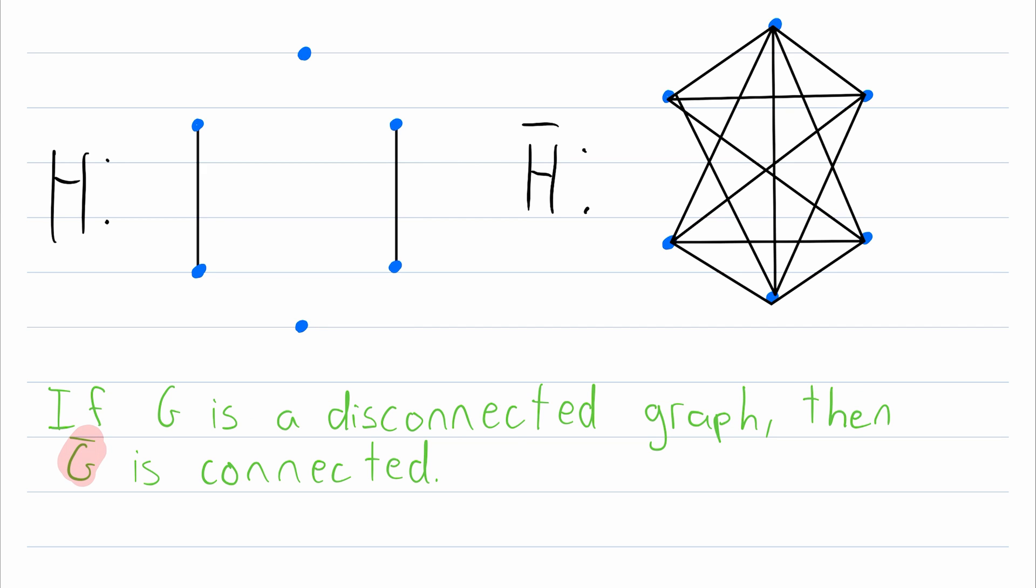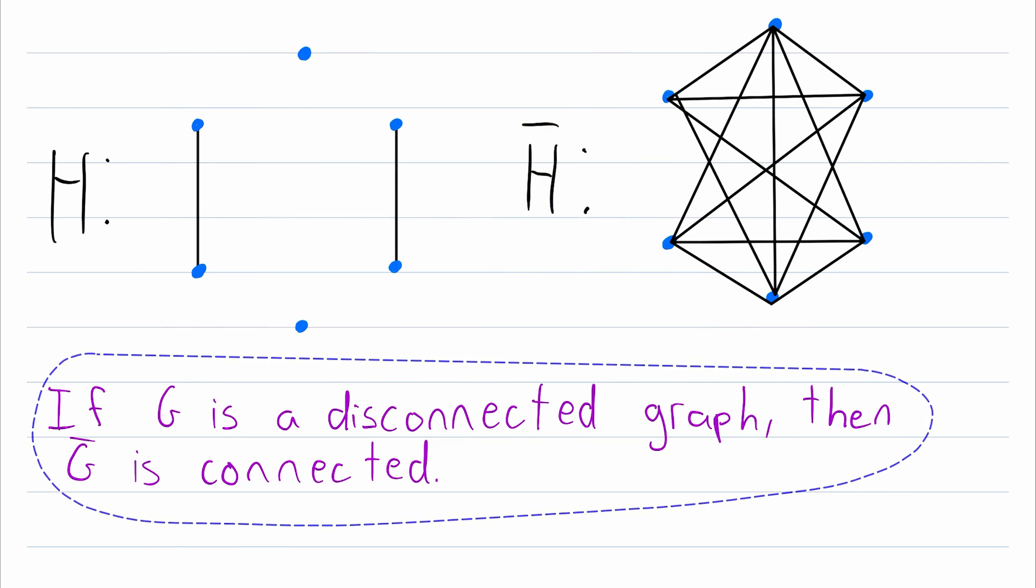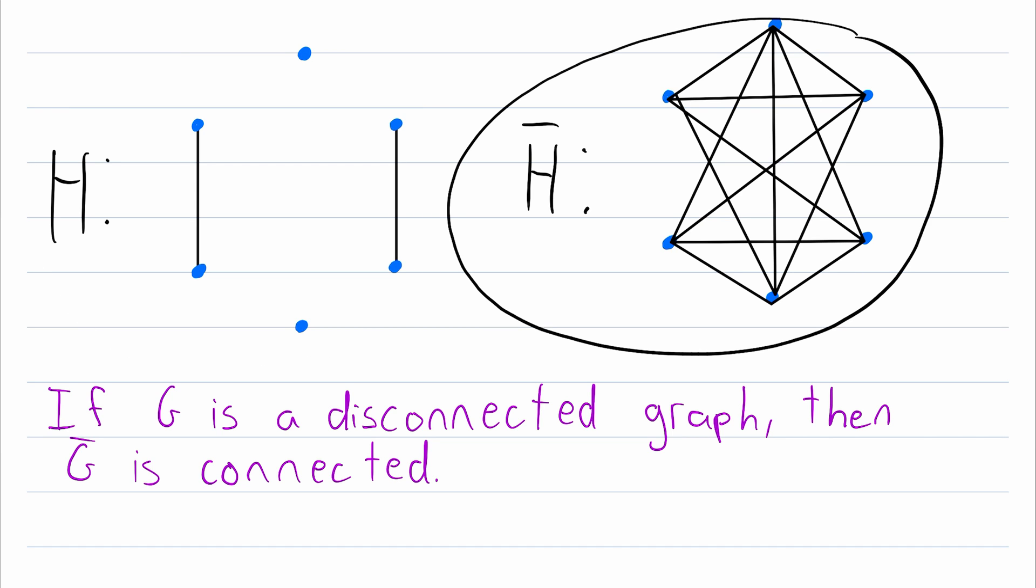then G complement will always be a connected graph. And I think that green might be a little hard to read, so let me just change its color to purple. So that's pretty neat. If you've got a disconnected graph, take its complement and that will always be a connected graph.